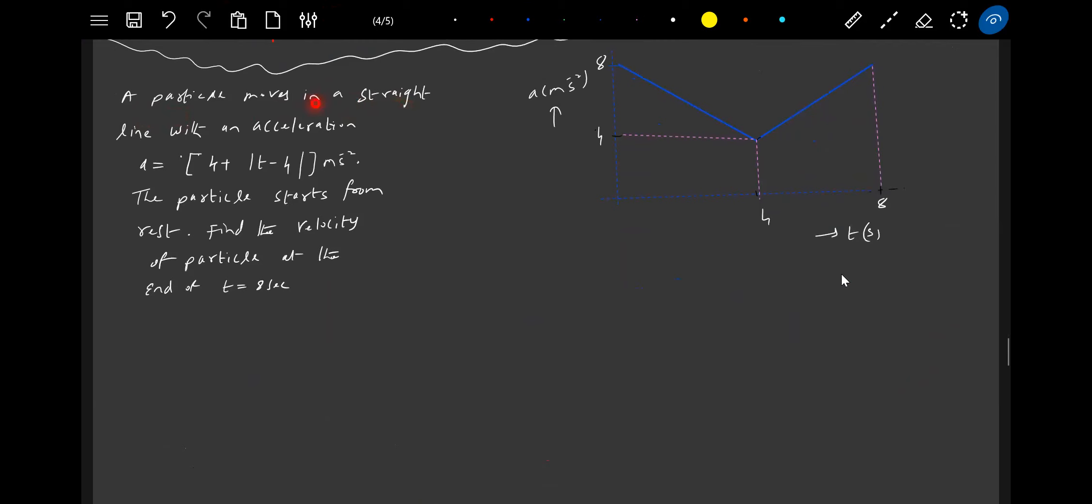A particle moves in a straight line with an acceleration equal to four times modulus of T minus four meters per second squared.